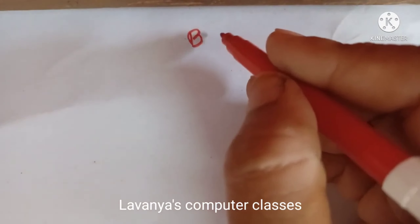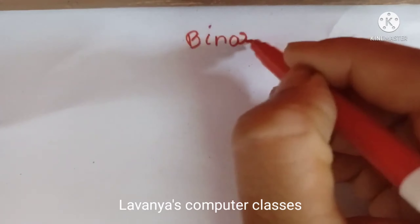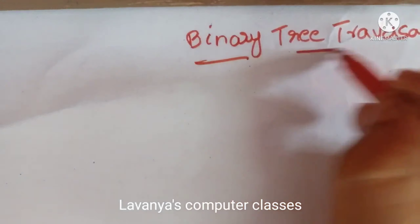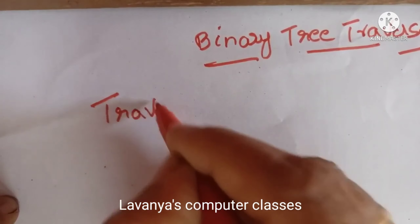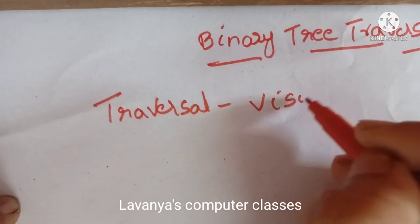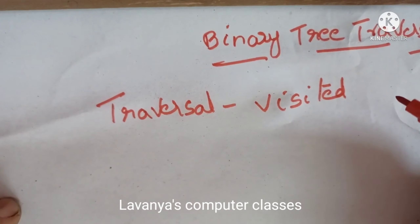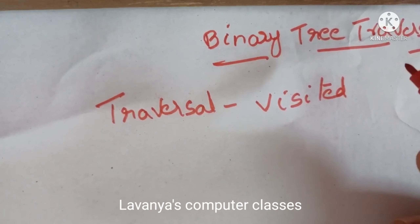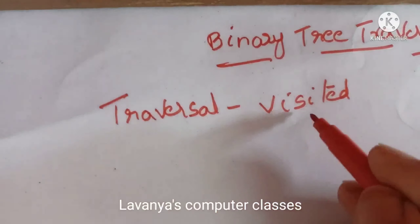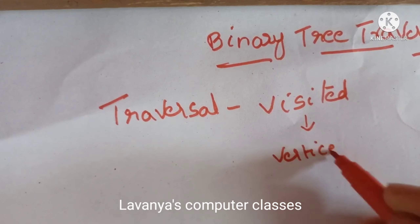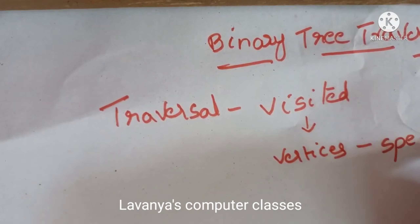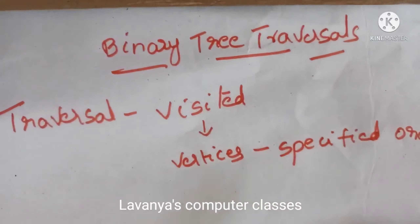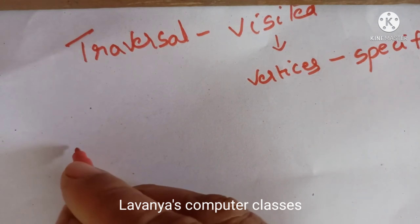Welcome back to Lavanya's computer classes. In this video I will explain binary tree traversal. Traversal means visiting each node in a specified order — visiting all the vertices in a specified order is called tree traversal. According to these specified orders, binary tree traversals are divided into three methods.